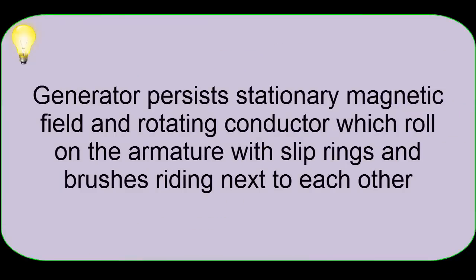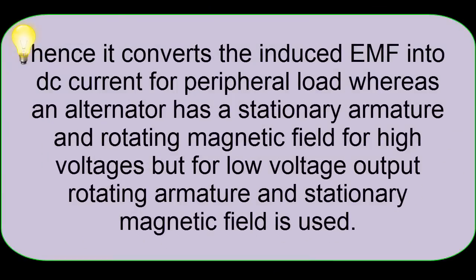A generator has a stationary magnetic field and a rotating conductor which rolls on the armature with slip rings and brushes riding next to each other. Hence it converts the induced EMF into DC current for a peripheral load.